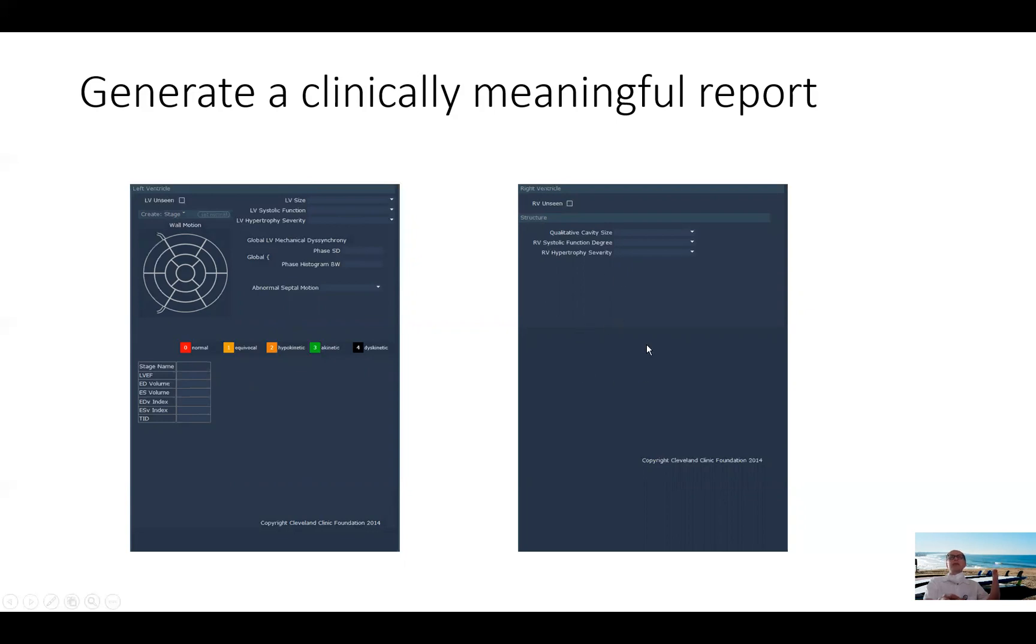The next page will be a comment about the RV function. This is the ventricle that we should not ignore. In PET, we see it reasonably well. We should comment about it because we comment about the function of the right ventricle, the size of the right ventricle. Patients right now are presenting with multiple comorbidities besides CAD. So this is an important parameter that should not be ignored. It should be reported.